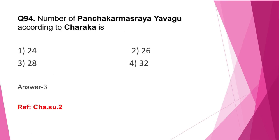Question number 94: Number of Pancha Karma Shraya Yavagu according to Charaka is 24, 26, 28, or 32? The correct answer is option 3 — 28. This is a direct question from Charaka Sutra, Apamarga Tanduliya Adhyaya. The constituents of each of these 28 yavagu along with their indications are three-star topics.